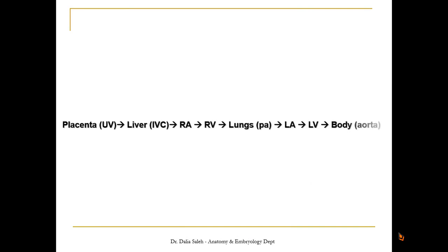Fetal circulation is different from adult circulation. The placenta is the source of oxygenated blood for the fetus, delivering it through the umbilical vein to the liver, and from the liver it empties into the inferior vena cava. Because the lungs are not functioning, we need to bypass them, and to deliver oxygenated blood rapidly we also need to bypass the liver. There are three shunts or shortcuts that bypass these structures.